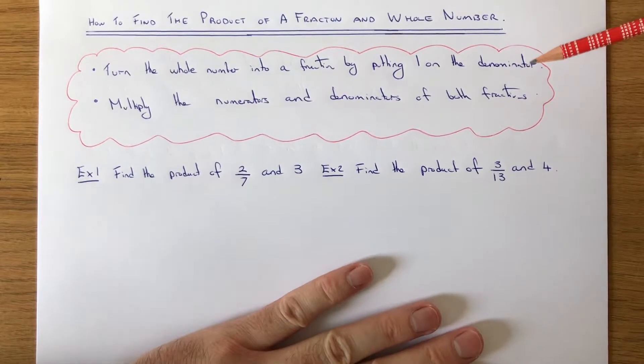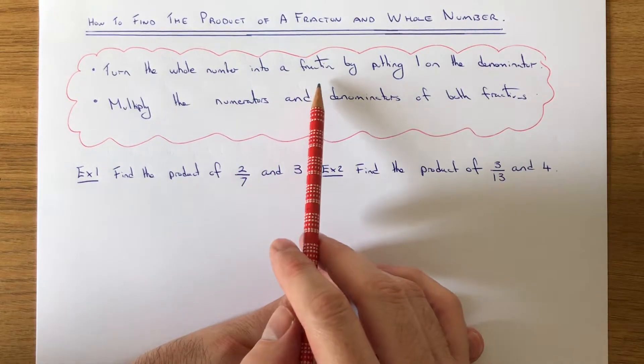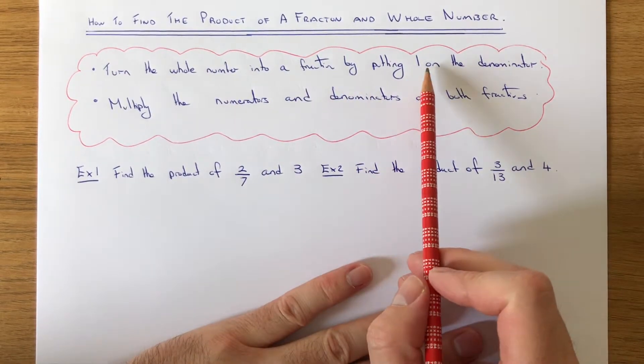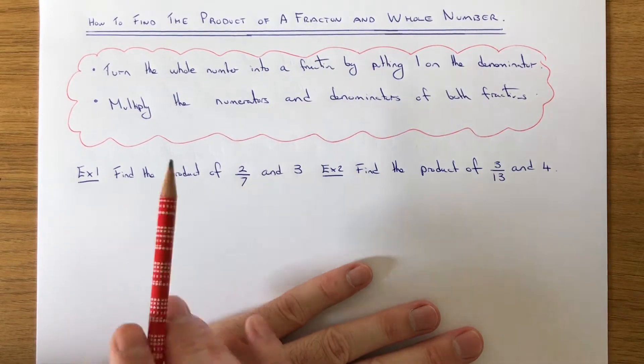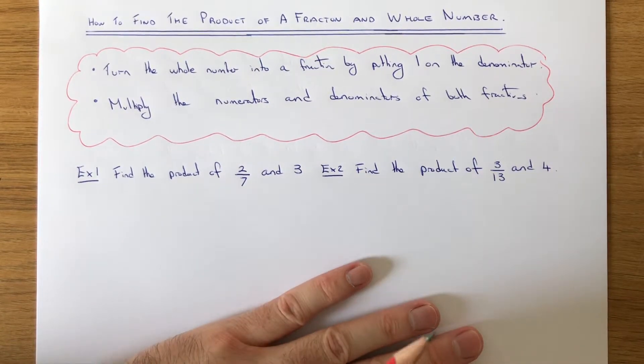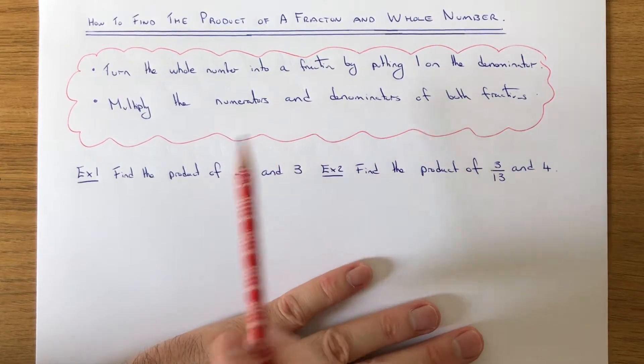If you have to multiply by a whole number, you will need to turn the whole number into a fraction by putting 1 on the denominator of the fraction. Once you've done this, it's then just a simple case of multiplying the two fractions together by multiplying the numerators and the denominators.